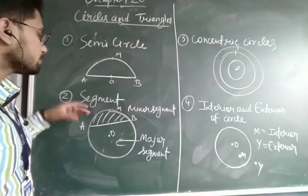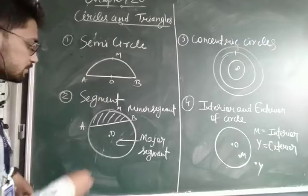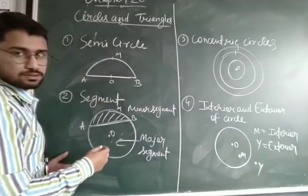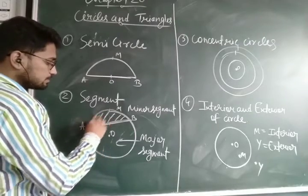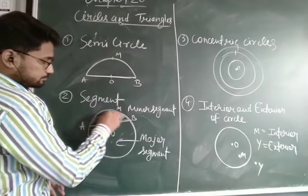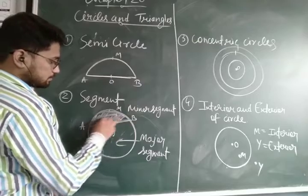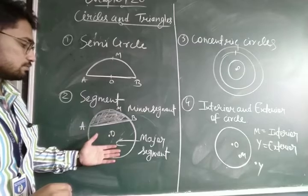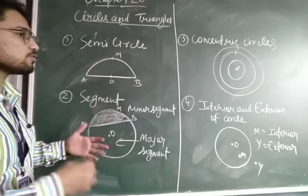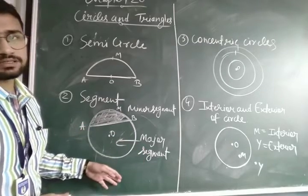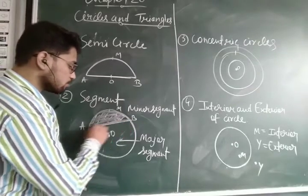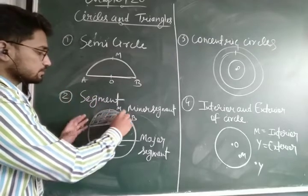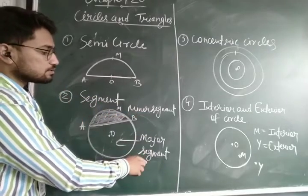Now the next one is the segment. There is a chord, and the area which is occupied on one side of the chord is called the minor segment, and the leftover portion of the circle's area is called the major segment. So the chord divides the circle into two parts: the minor segment and the major segment.